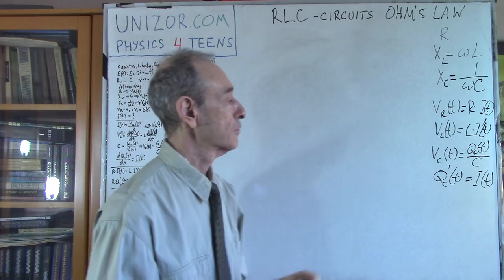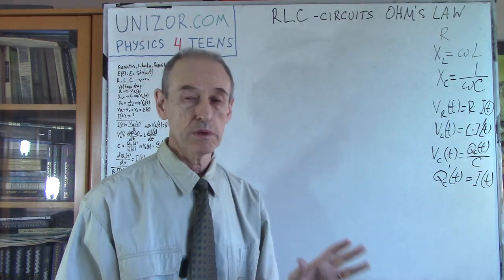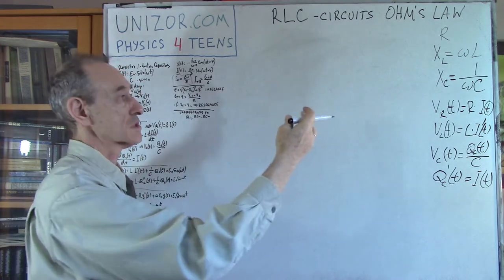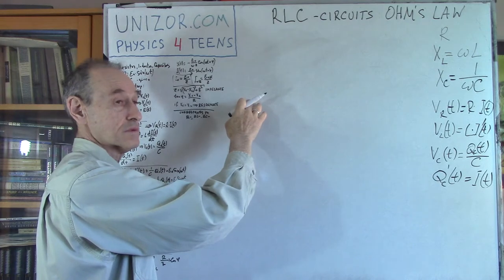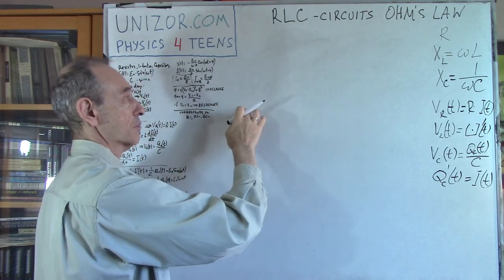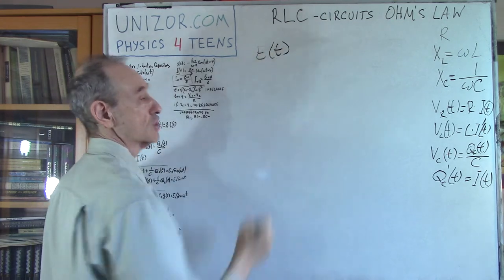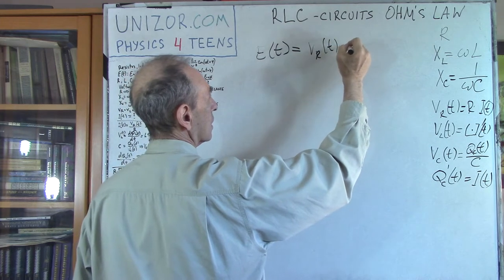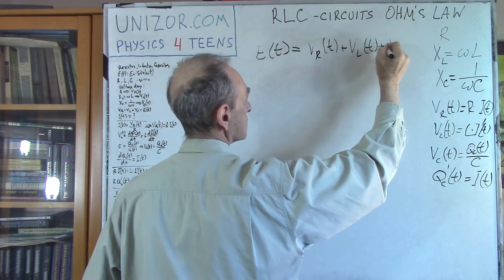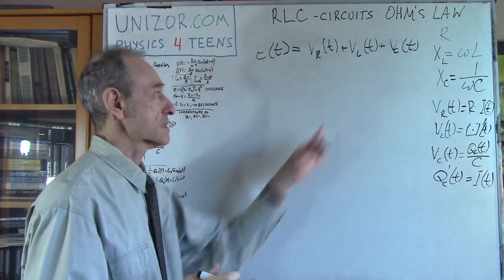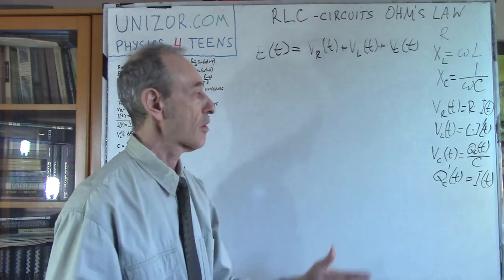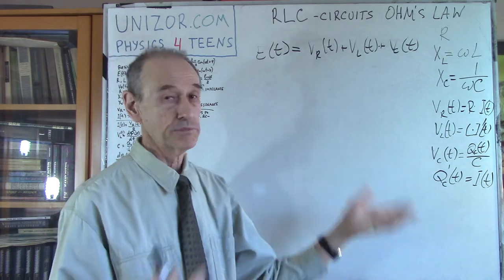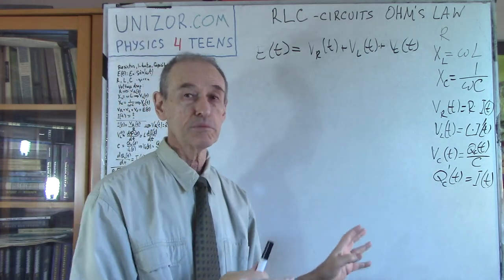The key equation is: in a closed circuit with an EMF source, the generated voltage equals the sum of all three voltage drops. So E(t) = V_R(t) + V_L(t) + V_C(t). This equation will allow us to determine the current in the circuit. It is actually a differential equation.